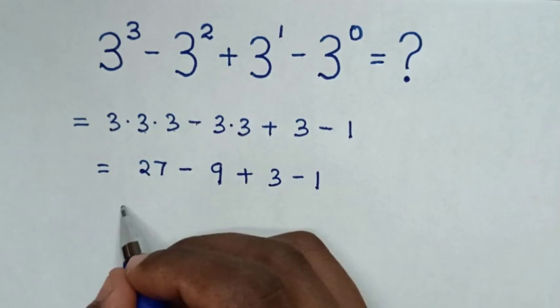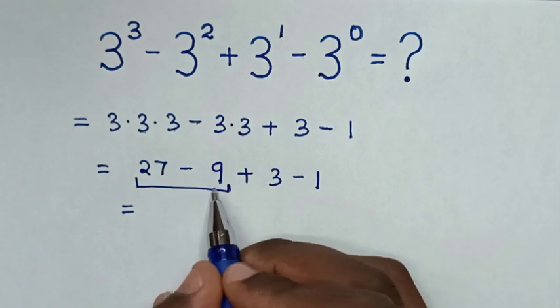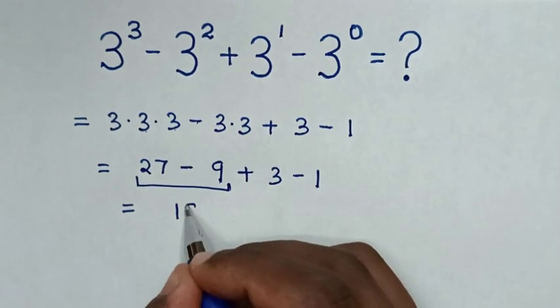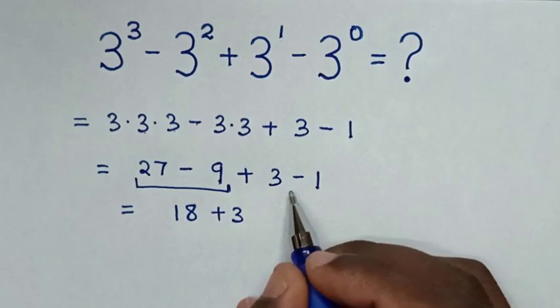Then it will be equal to, starting with the first operation: 27 - 9 is 18, then plus 3, then minus 1.